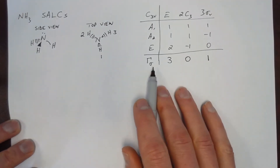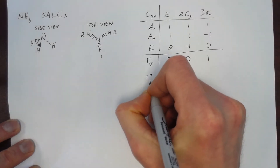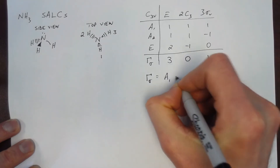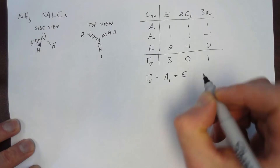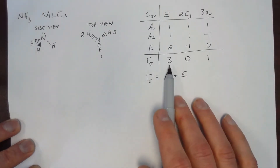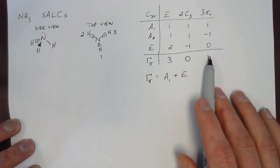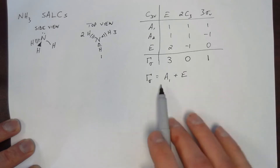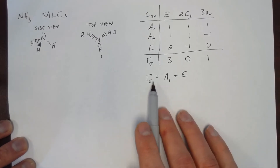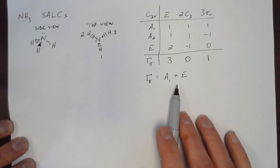This is a reducible representation, so we need to reduce it. We can do this by inspection: it is equal to A1 plus E. We can confirm that by adding the characters — two plus one is three, negative one plus one is zero, and one plus zero is one. That confirms this reducible representation reduces to these irreducible representations.